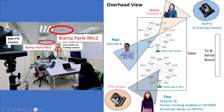From the overhead view, we can see that when Paul is talking, it will trigger channel 8 on Microphone 1 and he will be captured by the TR tracking camera. When Tina is talking, she will trigger channel 16 and automatically enable human tracking on the front camera. When Grace is talking, she will trigger channel 4 on Microphone 1 and will be captured by the PTZ camera on the back side.